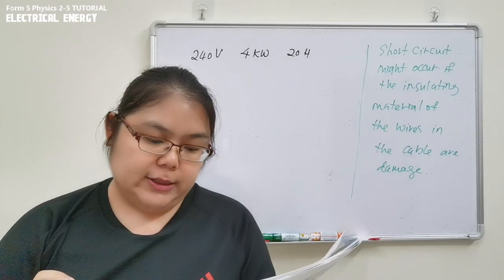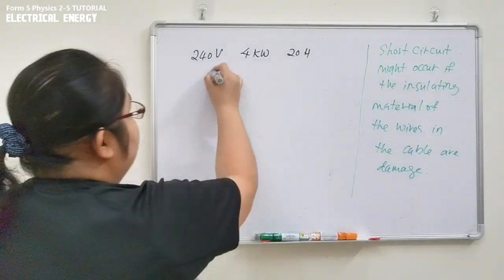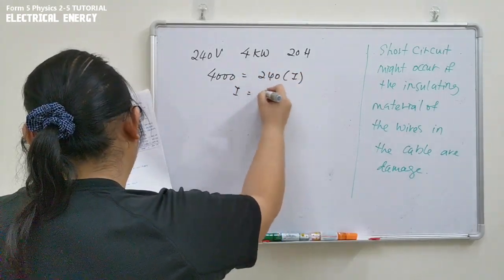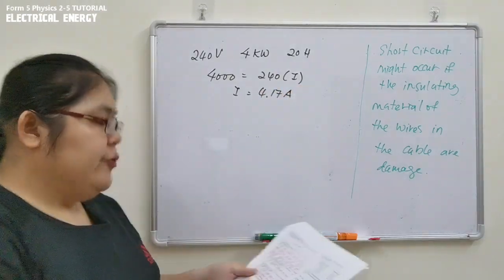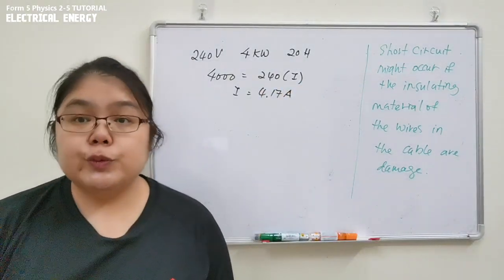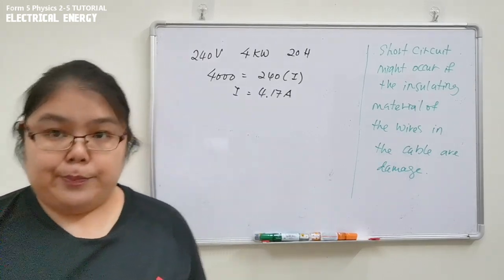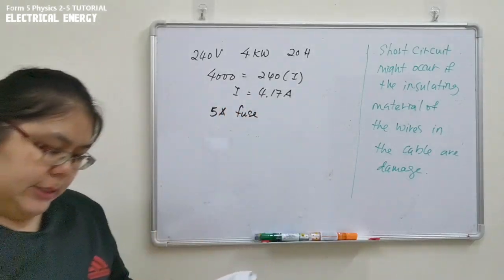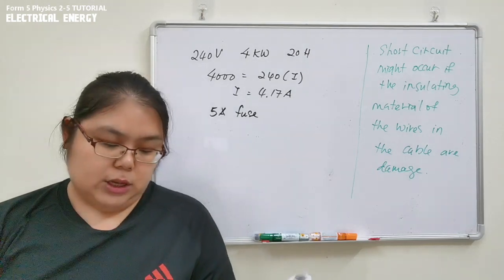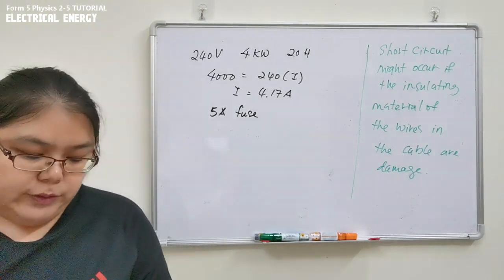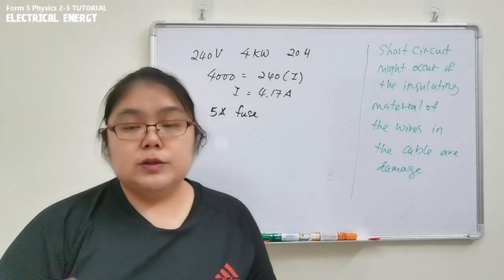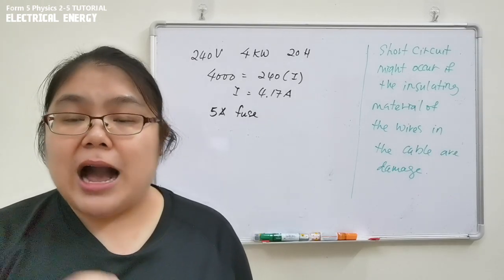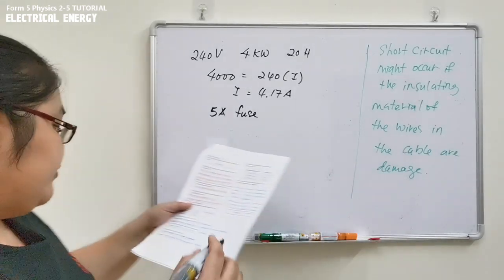For part (b), we need to find the suitable fuse for the refrigerator. First calculate the current: using P = VI, the current is 4.17 amperes. We then select a 5-ampere fuse, since the fuse current must be slightly greater than the current flowing through the circuit.